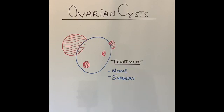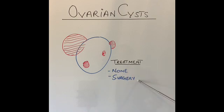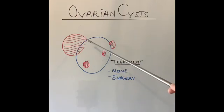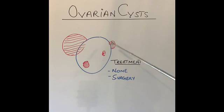If there is a suspicion of cancer, surgery is also required. Surgery can be performed either as a keyhole (laparoscopic) operation or as open surgery with an abdominal incision. During surgery, just the cyst or part of it may be removed. However, if cancer is suspected, the whole ovary or a more extensive operation may be necessary.